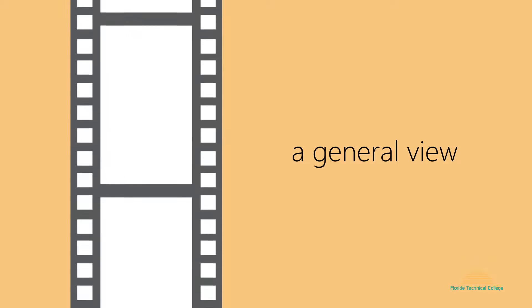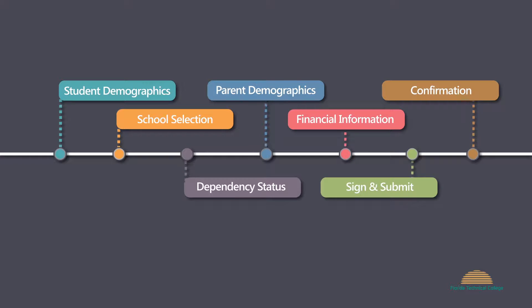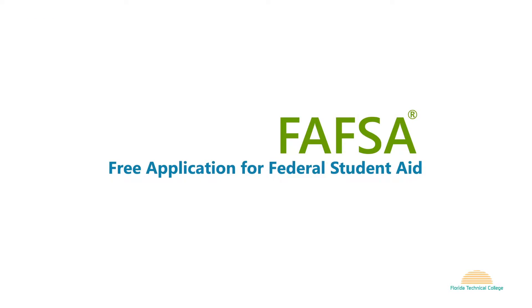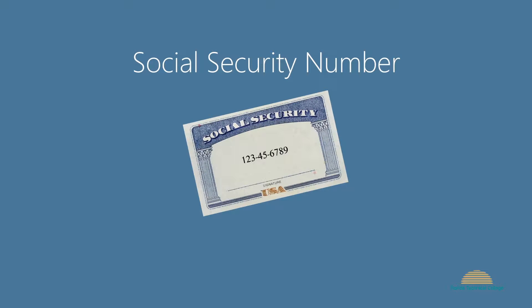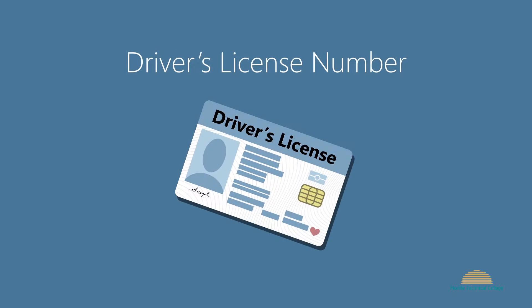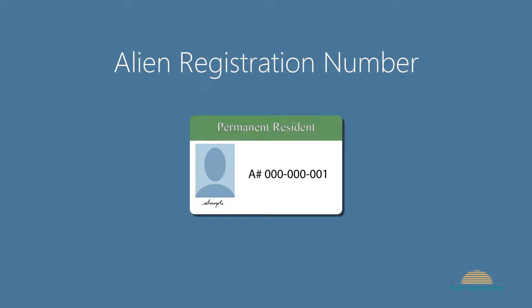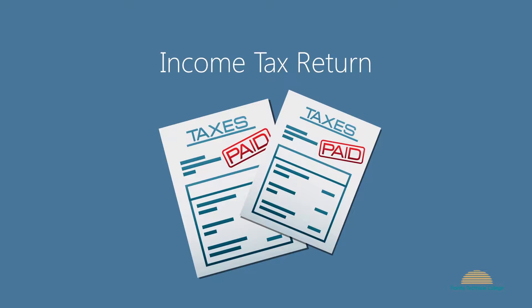This video will give you a general view of the process for completing the Free Application for Federal Student Aid, FAFSA. Please have the following information on hand: your Social Security Number, your parent's Social Security Numbers if you are a dependent student, your Driver's License Number, your Alien Registration Number if you are not a U.S. citizen, income documents or other records of money earned, and your 2015 Income Tax Return.